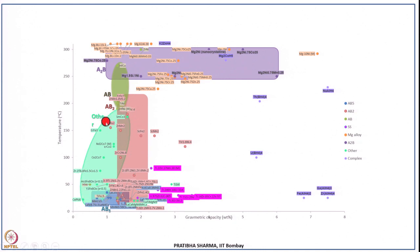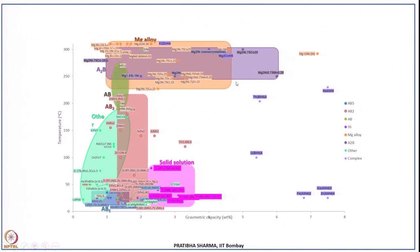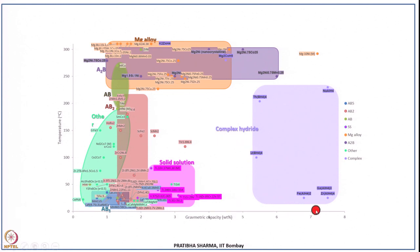A3B7 type materials also occupy this space. Magnesium-based alloys have a very high desorption temperature but good gravimetric capacity. Solid solutions, compared to other metal hydrides, have a higher gravimetric capacity and lower desorption temperature. Finally, complex hydrides have very high gravimetric capacity and a wide range of desorption temperatures. This summarizes all we have covered in solid state hydrogen storage.